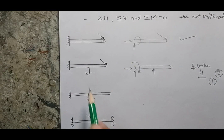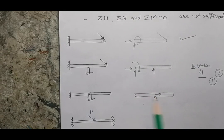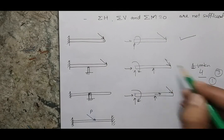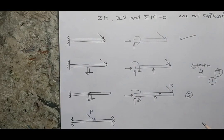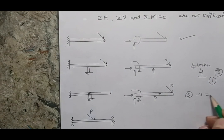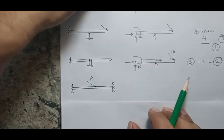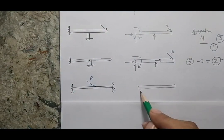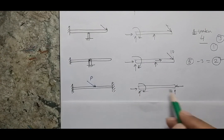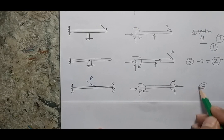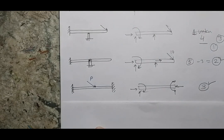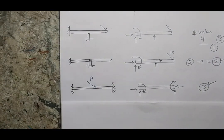If instead of a roller contact I have a pin joint at the additional support, removing it introduces two forces, plus three forces from the fixed joint, giving five unknowns total. Using the three laws of statics leaves two unknowns unsolved, so the degree of indeterminacy is two. If the beam has two fixed ends — three unknowns at each end — there are six unknowns total. Using statics gives only three, so three unknowns remain, making the degree of indeterminacy three.